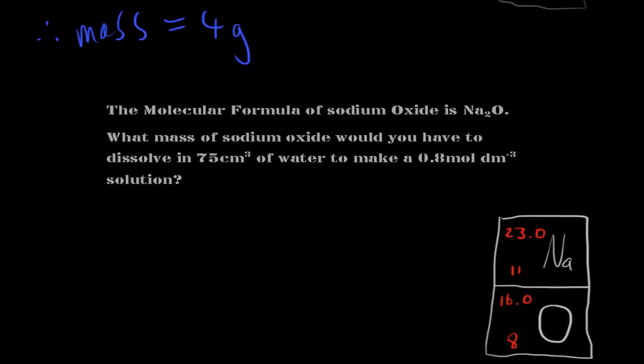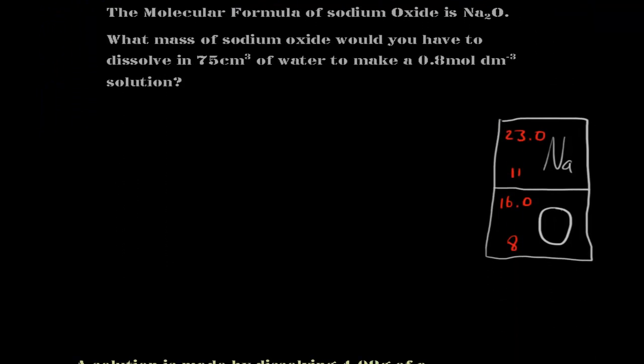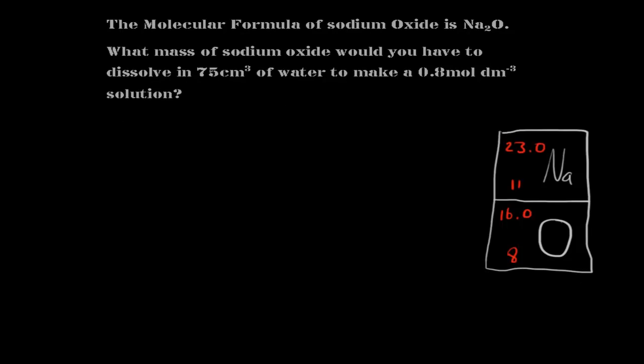So hopefully by the end of this video, you have quite a good idea of how we can use this manipulation to work out any sort of problem. Now, the molecular formula of sodium oxide is Na₂O.